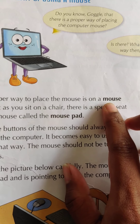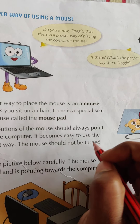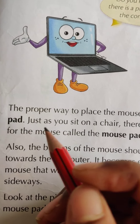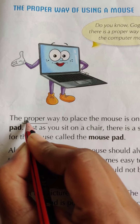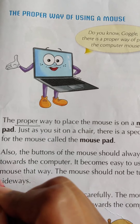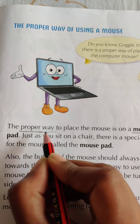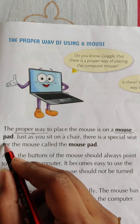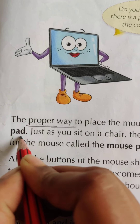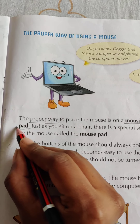What is the spelling of mouse? M-O-U-S-E, mouse. And here is the word proper: P-R-O-P-E-R, proper. What is the spelling of way? W-A-Y, way. That is the spelling of proper way. And what is the spelling of mouse pad? M-O-U-S-E mouse, P-A-D pad. Mouse pad.